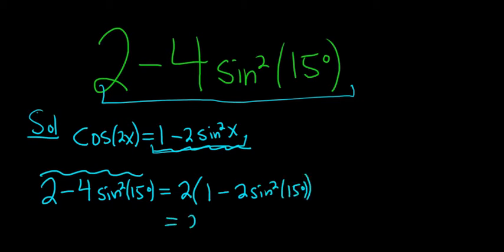This is equal to 2, and then now we'll use our identity. So 1 minus 2 sine squared of 15 degrees, that's the same thing as cosine, and then x is 15, so it's 2 times 15 degrees.